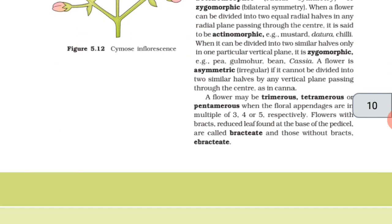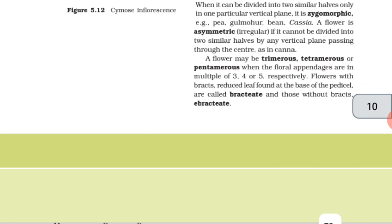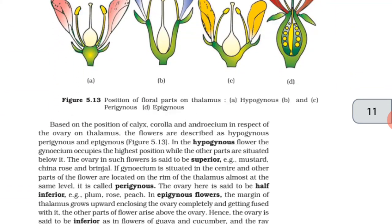A flower may be trimerous, tetramerous, or pentamerous when the floral appendages are in multiples of 3, 4, or 5 respectively. Flowers with bracts, reduced leaves found at the base of the pedicel, are called bracteate and those without bracts, ebracteate.